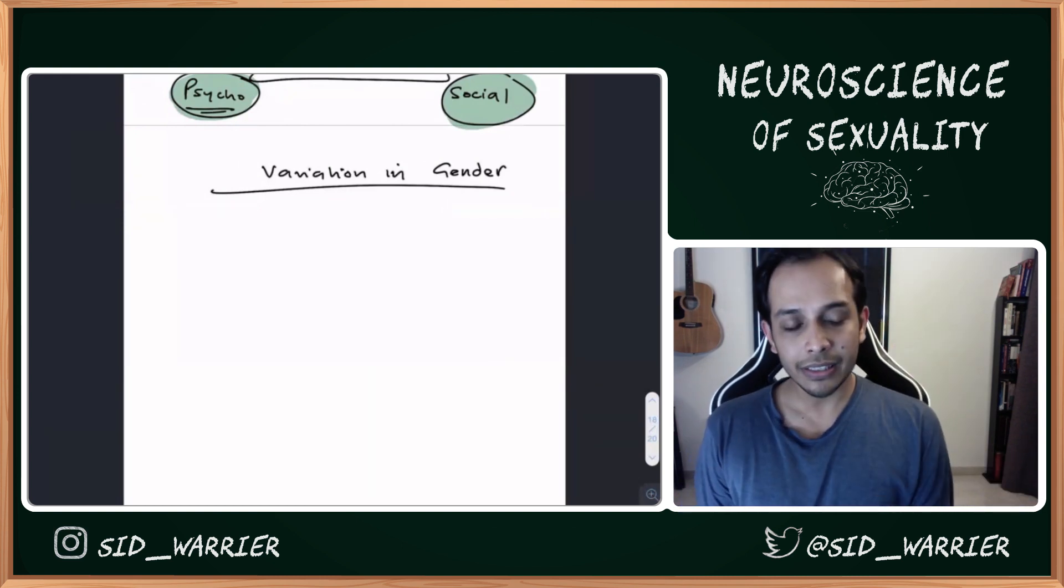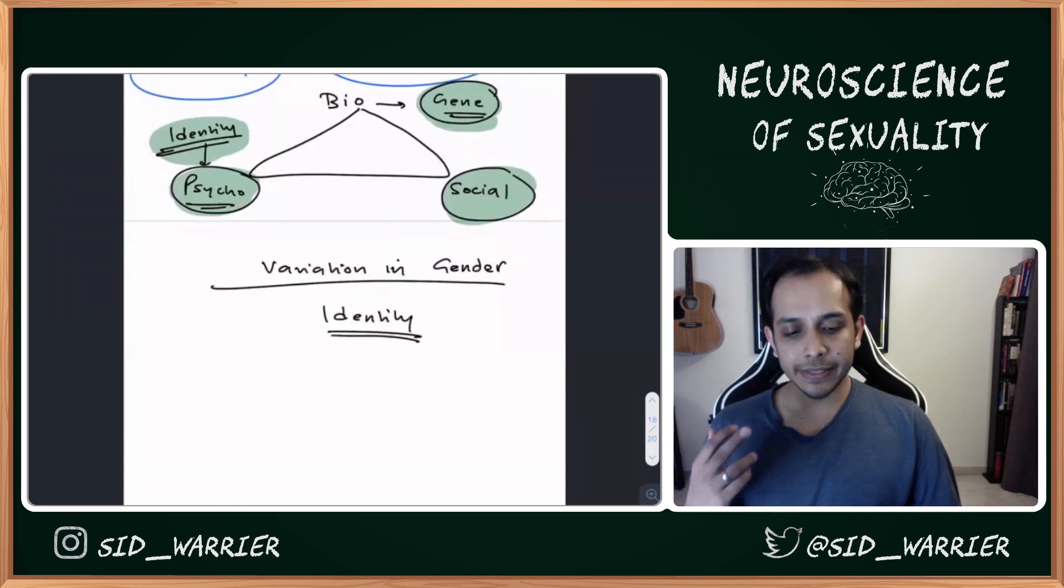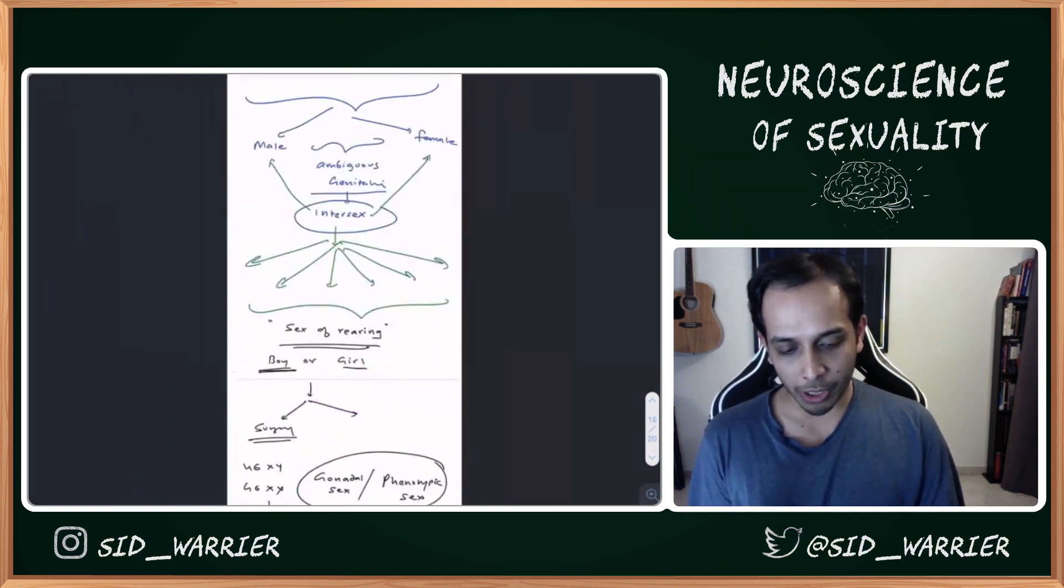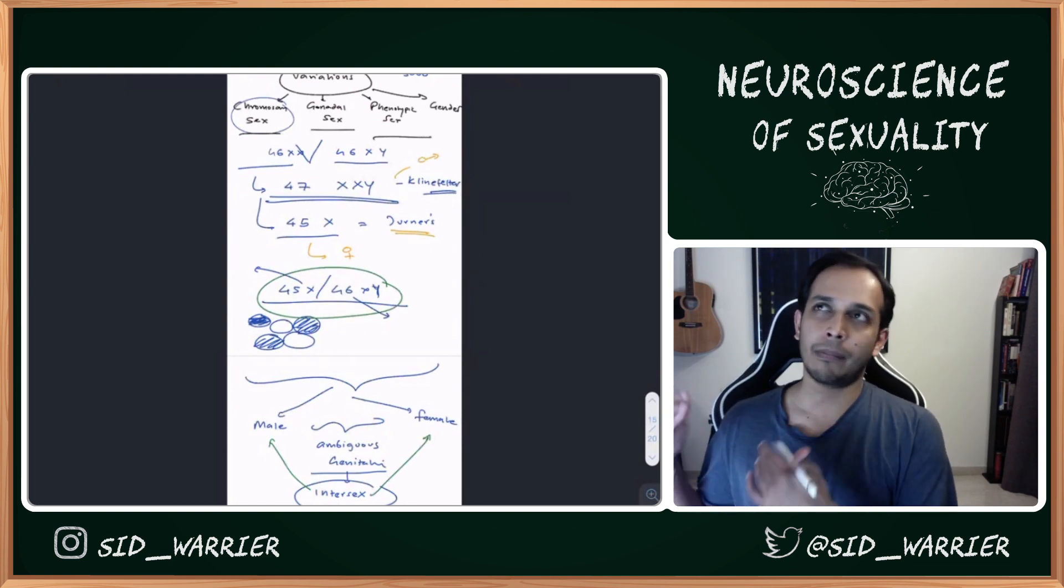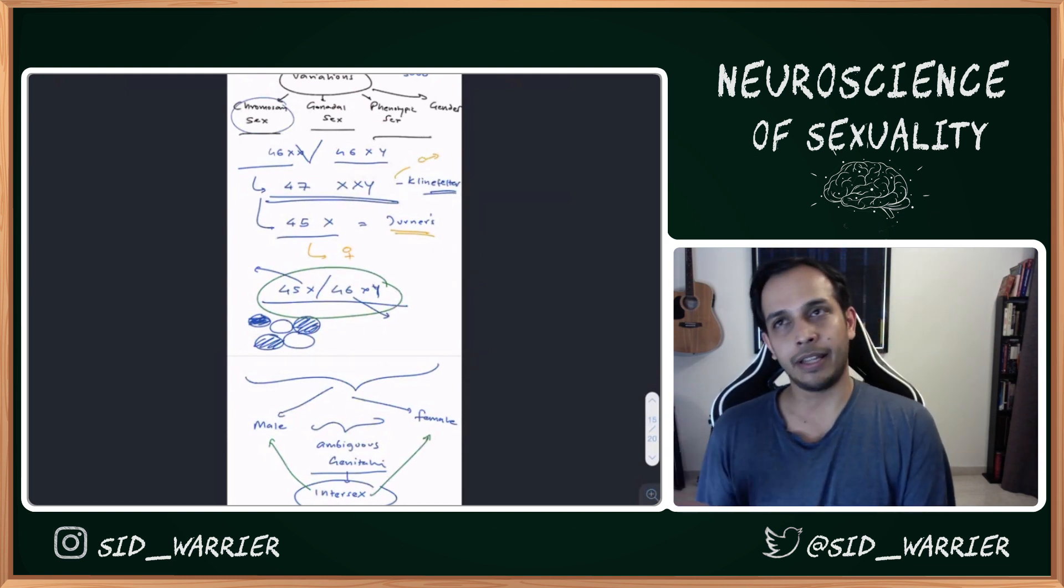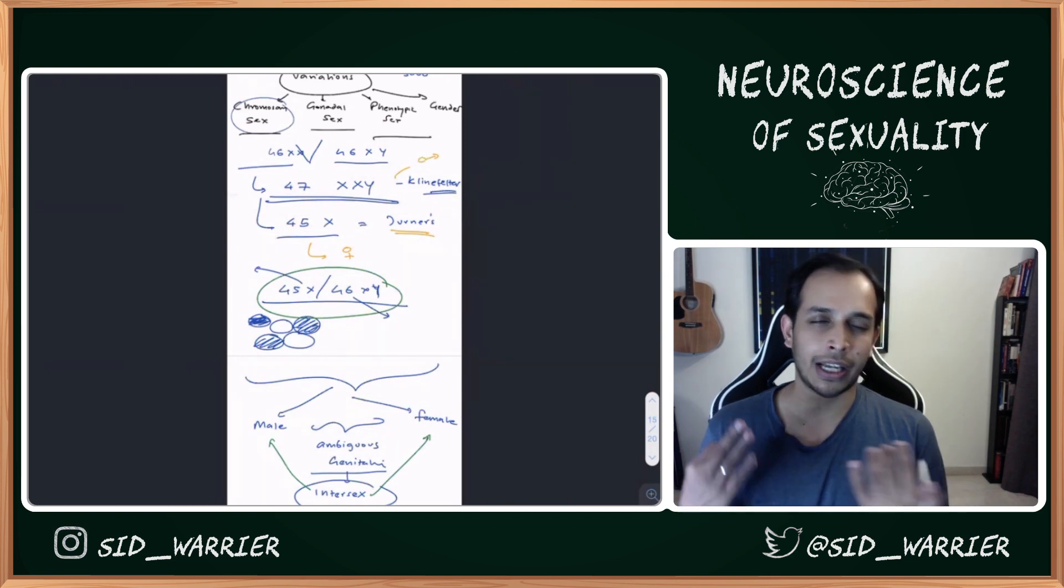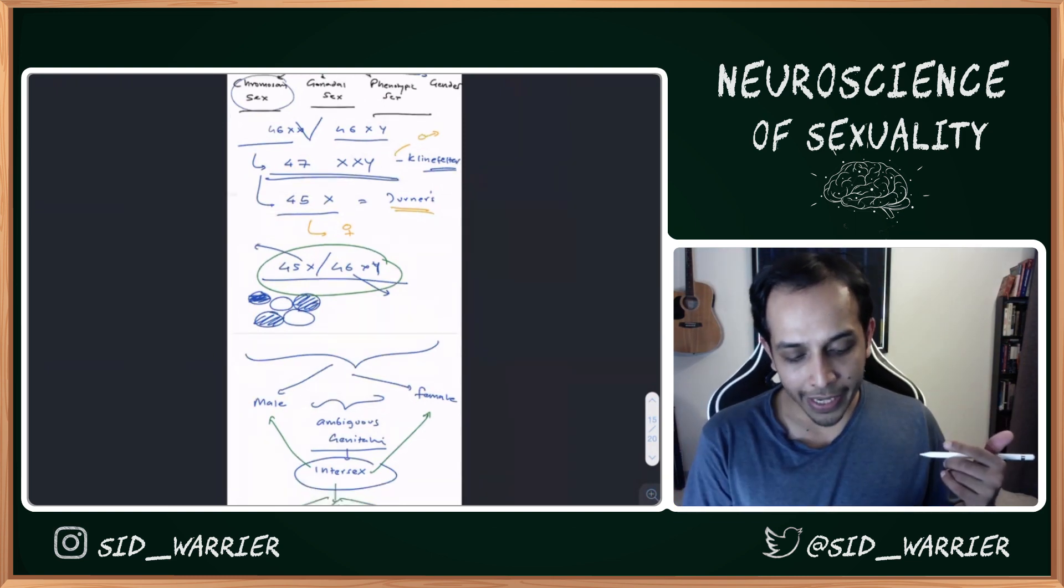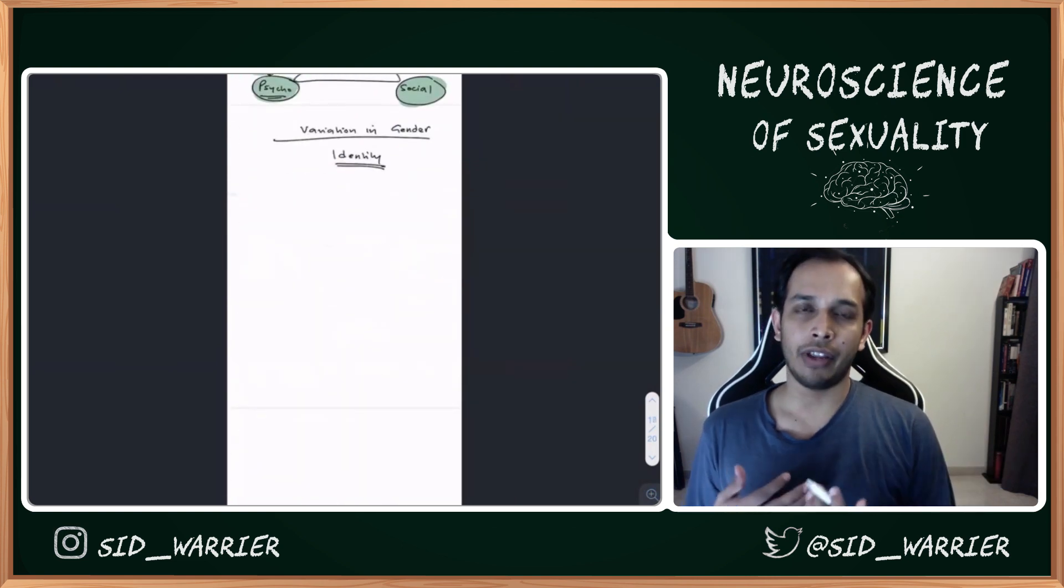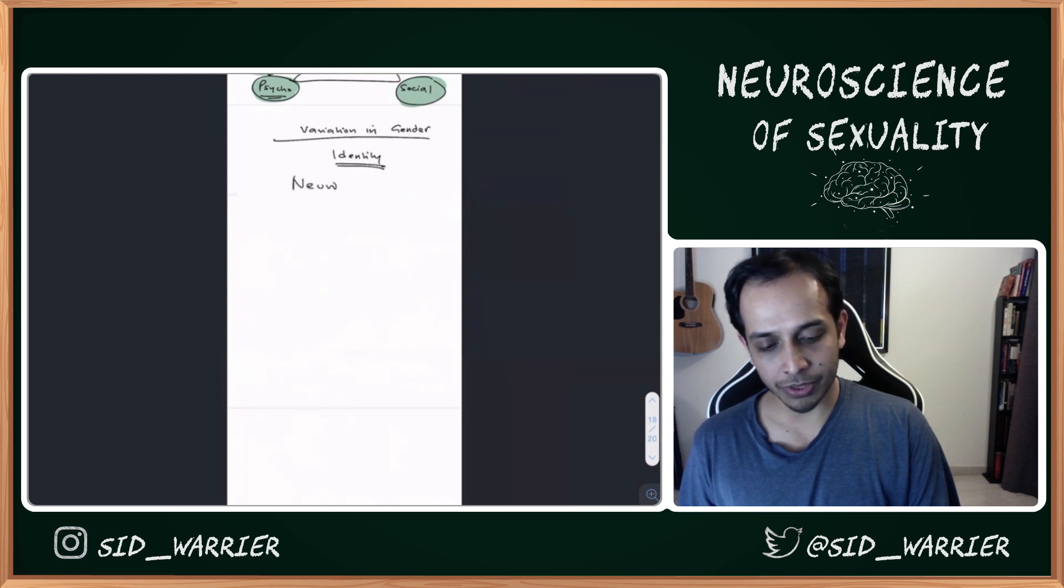Variations in gender - this is where identity comes in. Because till now everything we've talked about, all the variations - chromosomal, gonadal, phenotypic - was going beyond our control. We don't get to pick what chromosome we're born with, what internal sex organs we have, what secondary sexual characteristics we have. What we get to pick is when we have identity, and this is where neurobiology comes in.